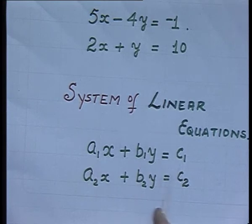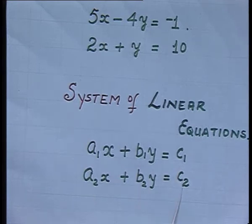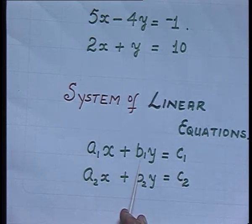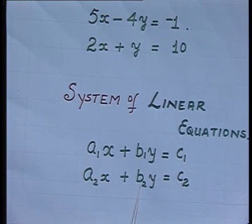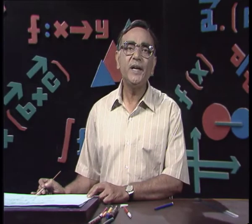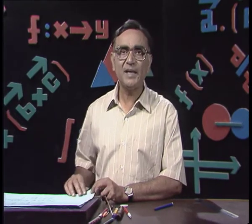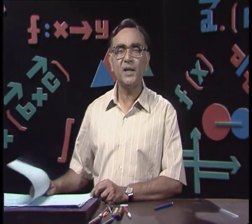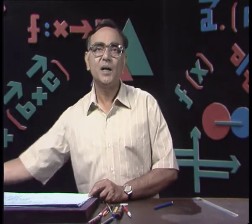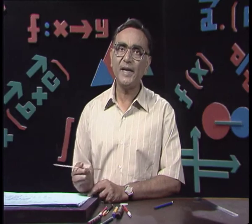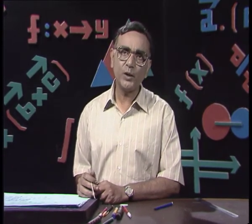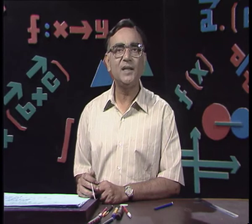Here a₁, b₁, c₁ all belong to the set of real numbers, and so do a₂, b₂, c₂. The precaution is that a₁ and b₁ cannot be simultaneously equal to 0, and a₂ and b₂ cannot be simultaneously equal to 0. To solve such a system, we convert both equations into either x or y as the subject and find ordered pairs.